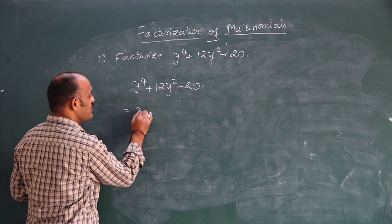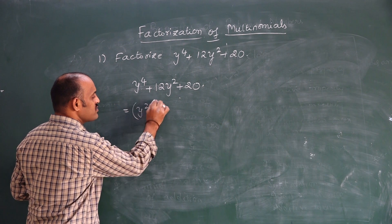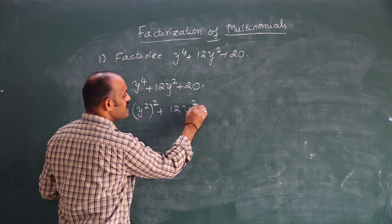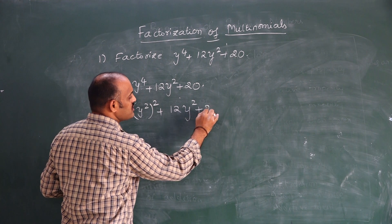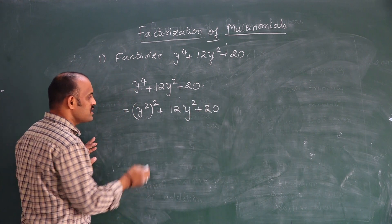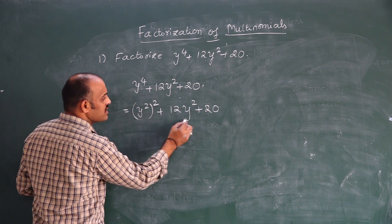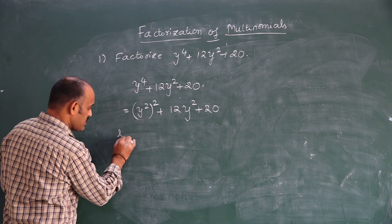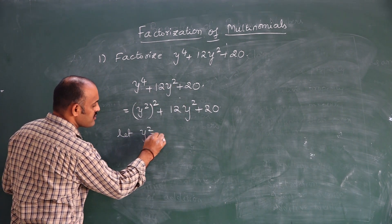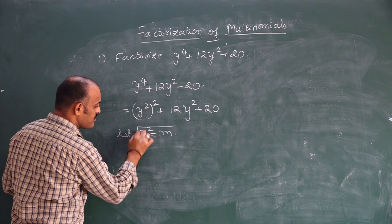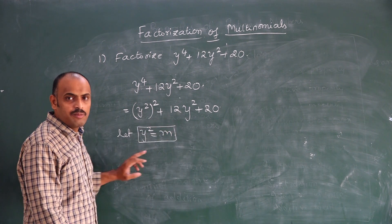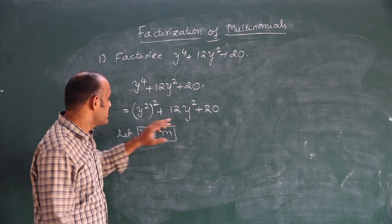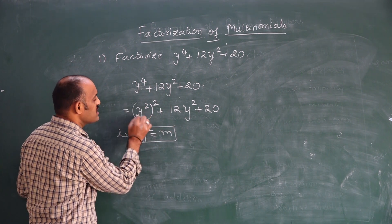We can write y⁴ as (y²)². Here I have y², and here also I have y². Let y² be equal to some m. So wherever y² appears, I will replace it with m.